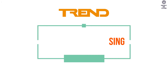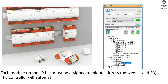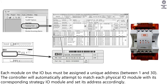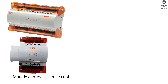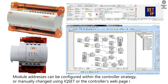I/O module addressing: each module on the I/O bus must be assigned a unique address between 1 and 30. The controller will automatically attempt to match each physical I/O module with its corresponding strategy I/O module and set its address accordingly. Module addresses can be configured within the controller strategy, or manually changed using XA or the controller's web page interface.